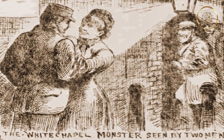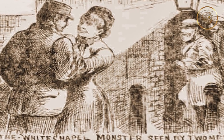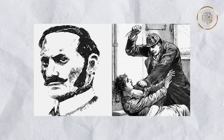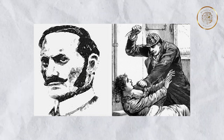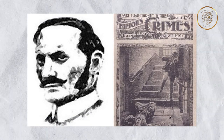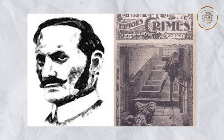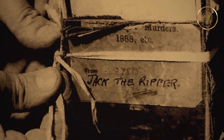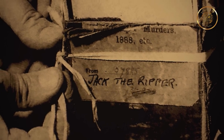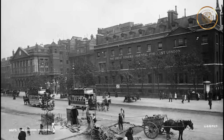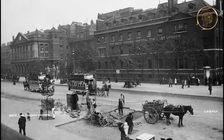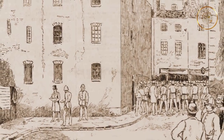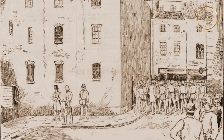Kosminski's mental instability further adds to the intrigue surrounding his potential involvement. He had a history of exhibiting violent tendencies and was even institutionalized for his erratic behavior. Some theorists argue that his mental state and violent inclinations align with the profile of a serial killer like Jack the Ripper. Proponents also point to his proximity to the crimes — as a resident of Whitechapel, he lived in close proximity to the areas where the Ripper victims were targeted.